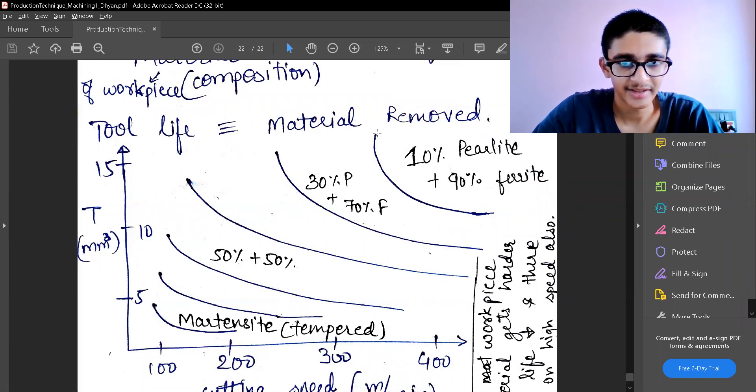When we have 10% pearlite and 90% ferrite, or 10% P and 90% F, this is the line which is there. That means that my tool life is going to vary with cutting speed which is shown over here. If I'm going to increase the number of pearlite percentage, my tool life is going to increase with a lower velocity also, and at higher velocity my tool life is going to decrease faster.